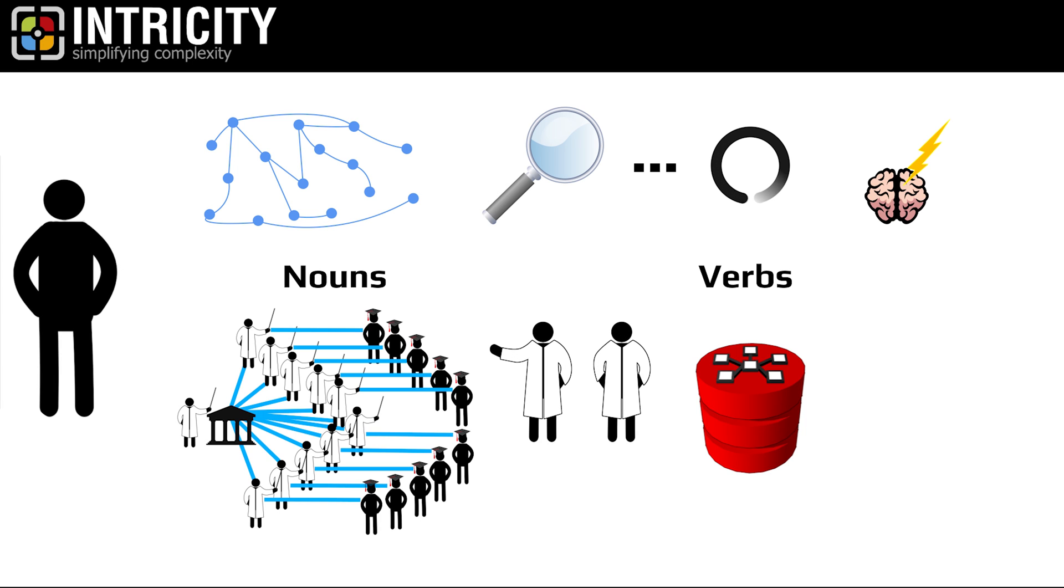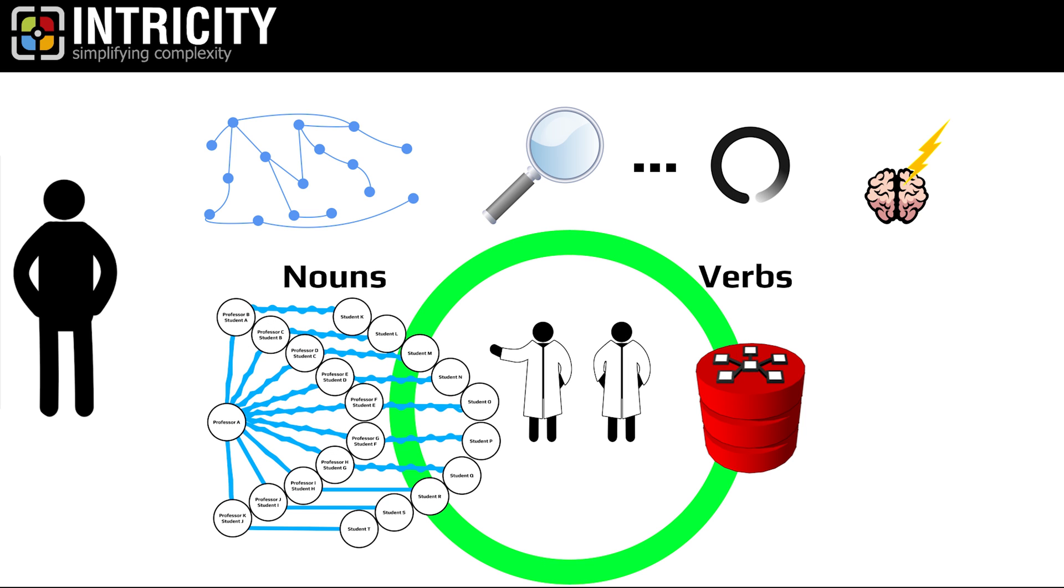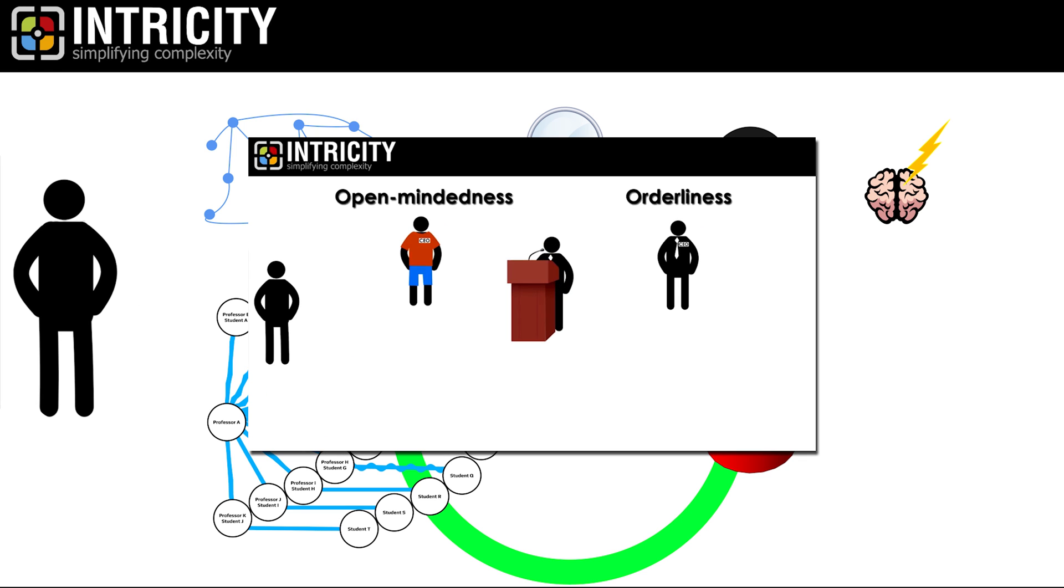So what we see is data science communities using graph databases to test inferences. The discovery of these relationships and their relevance to the organization often is what gets bubbled up into the data warehouse, thus closing the loop between the openness of data scientists and orderliness of data integration, like I discussed in one of my earlier videos.